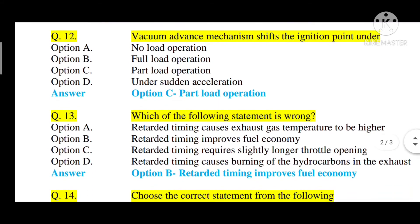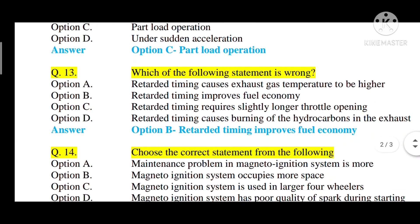Question number thirteen: which of the following statements is wrong? Option A: retarded timing causes exhaust gas temperature to be higher, option B: retarded timing improves fuel economy, option C: retarded timing requires slightly longer throttle opening, option D: retarded timing causes burning of hydrocarbons in exhaust. The correct answer is option B — retarded timing improves fuel economy — this statement is wrong.